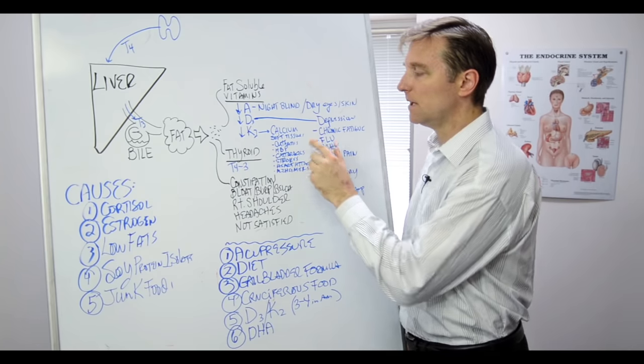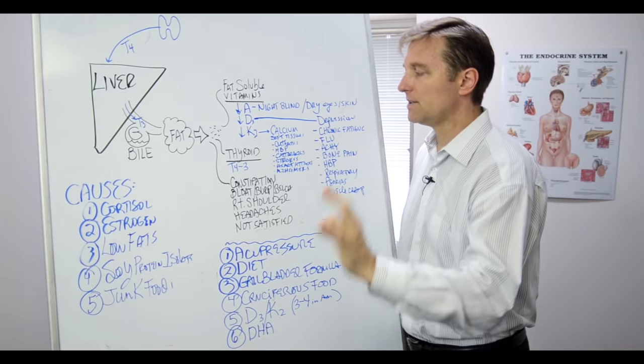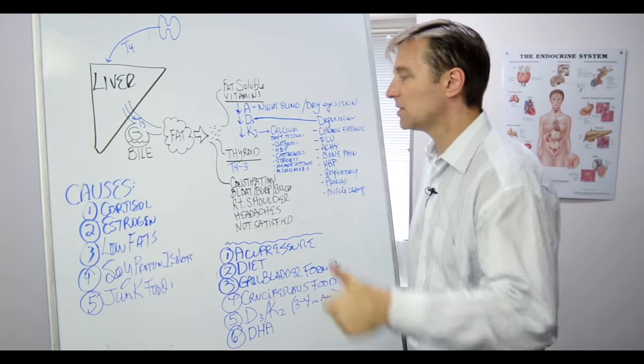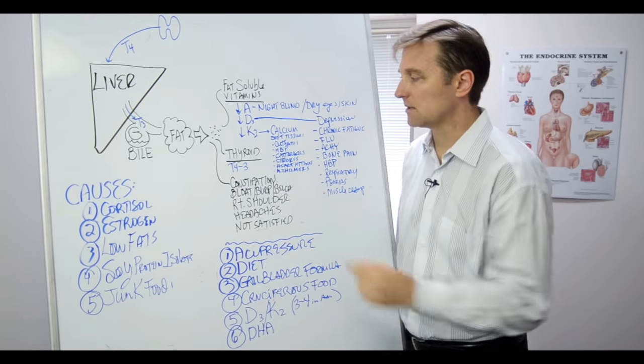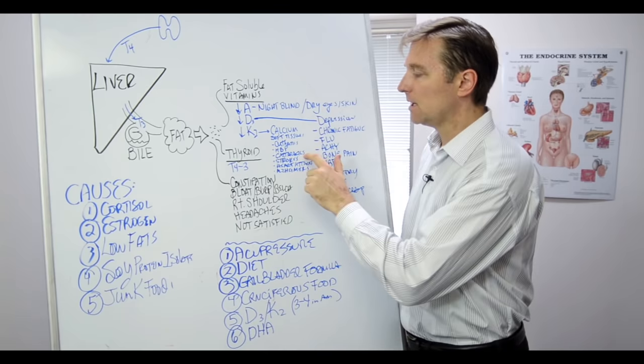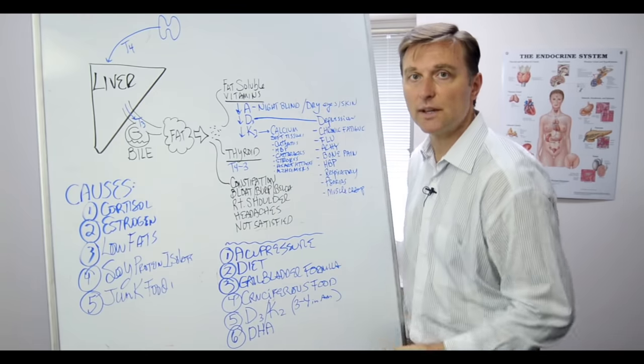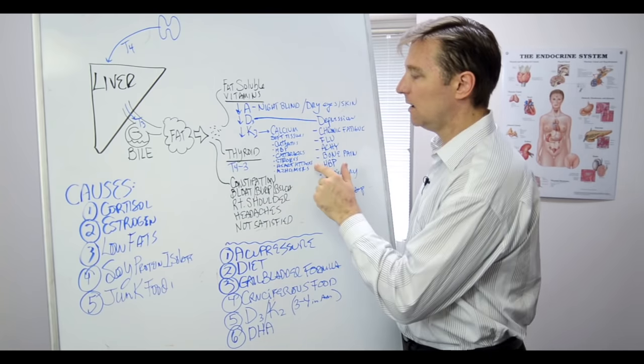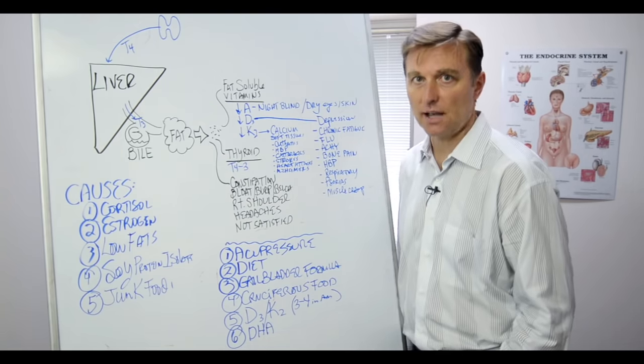So you get arthritis, tendonitis, bursitis. You get calcium in the arteries. That's why the blood pressure goes up. That's why you get heart attacks. Calcium on the eyes, that's a cataract. Kidney stones, strokes. Why? Because there's calcium and plaquing in the brain, arteries of the brain. Alzheimer's because of the calcium buildup.